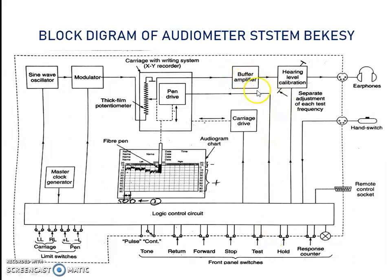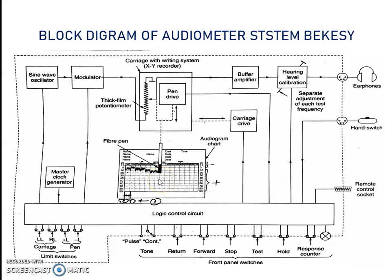From the attenuator, the test signal is fed via a buffer amplifier. The calibration circuit consists of 7 potentiometers which are adjusted one at a time until achieving the correct level. When the patient is able to hear the tone or signal, the patient indicates by pressing the hand switch. A pen connected to the attenuator presses a continuous record of the patient's intensity adjustments on an audiogram chart, producing a graphic representation of the subject. In this way the audiometer works.